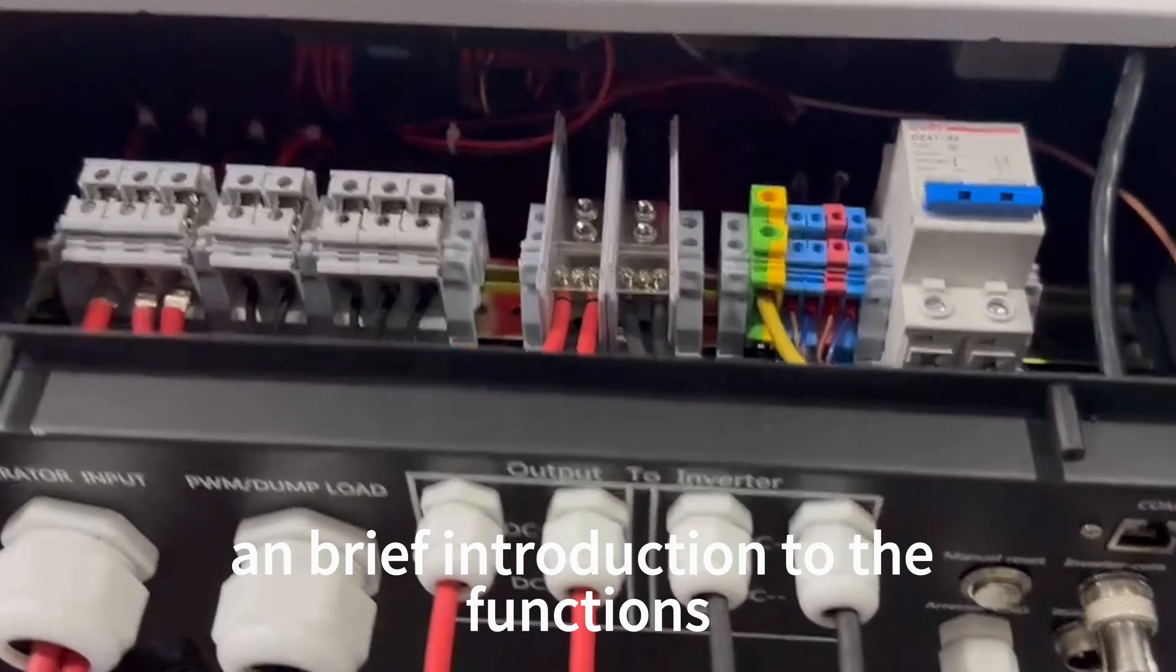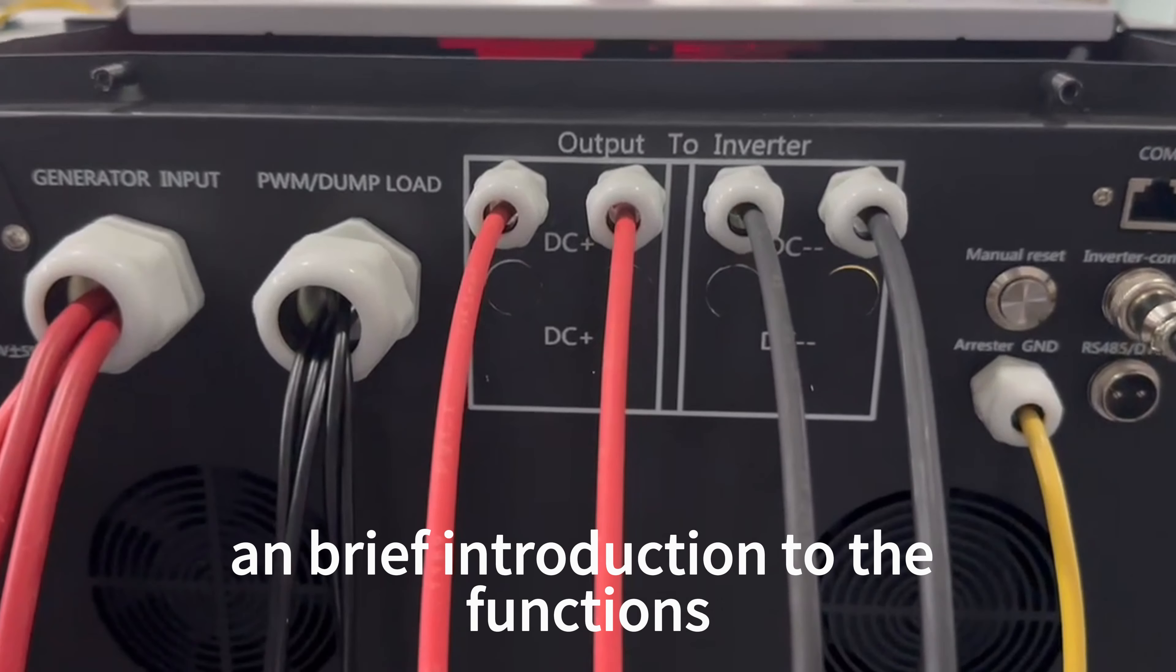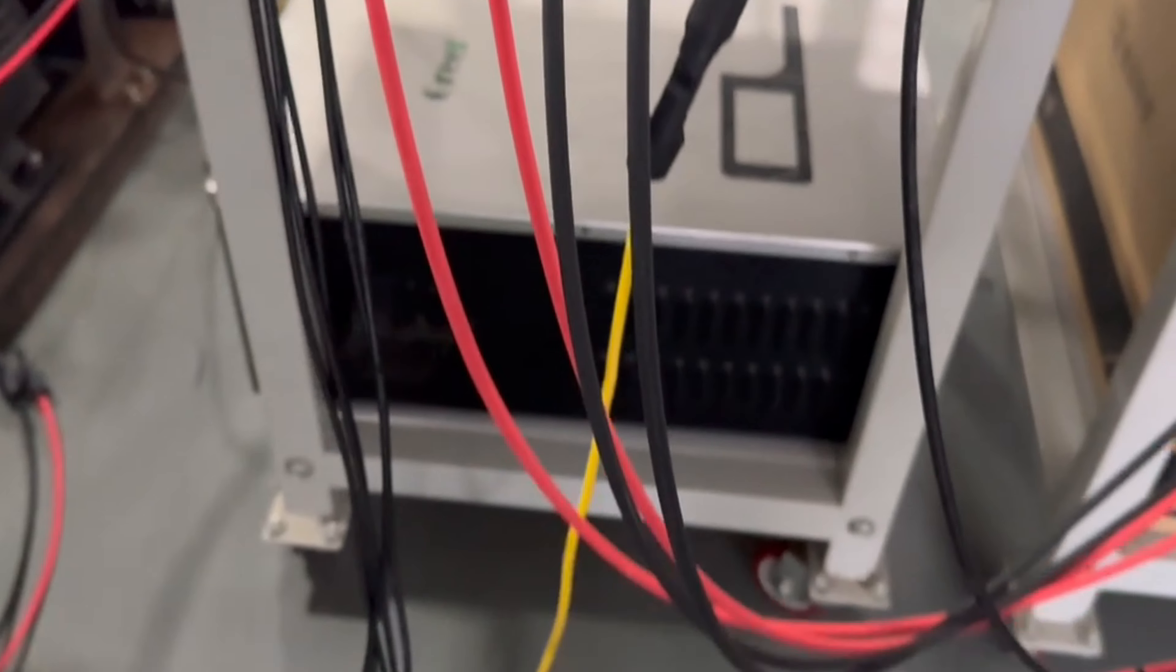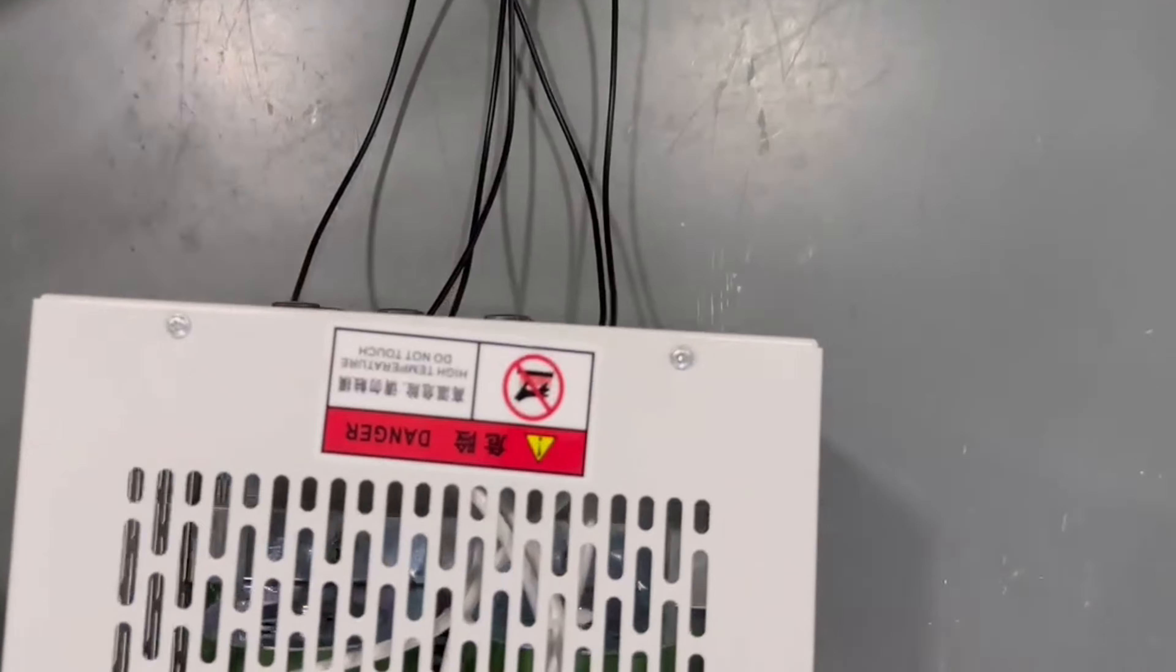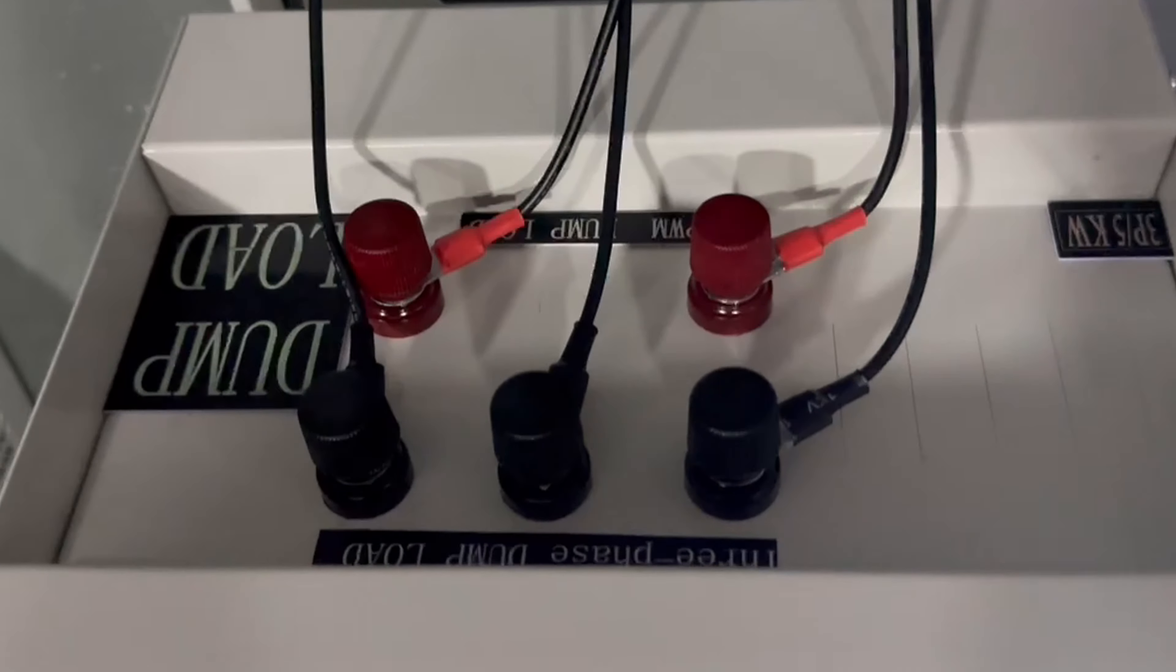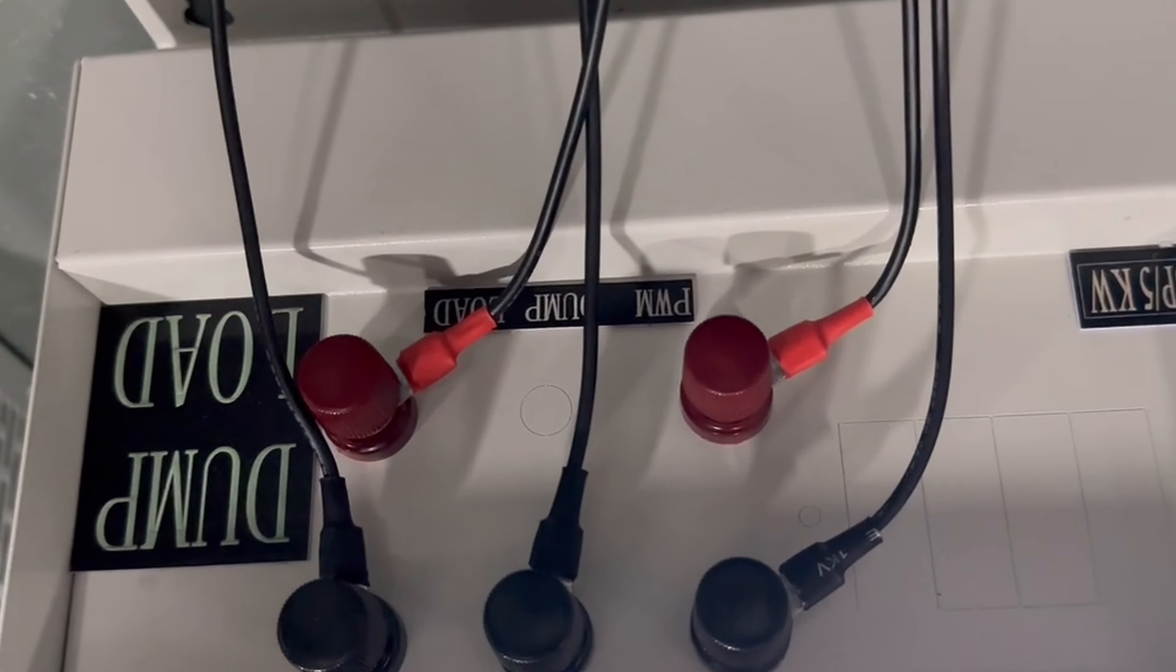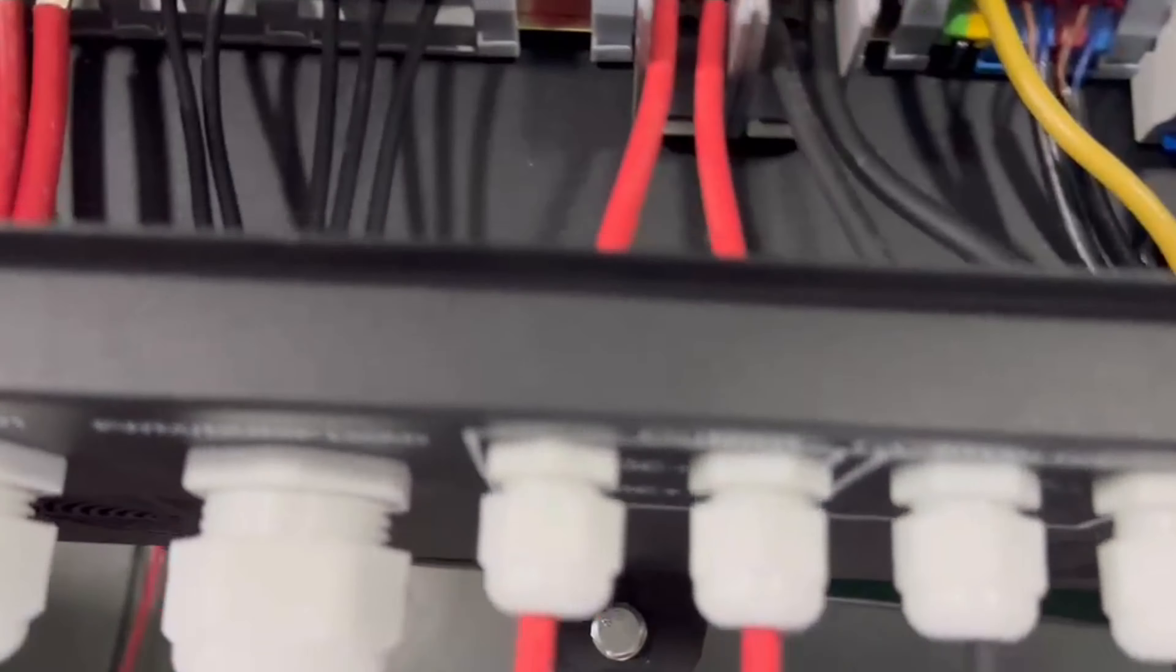Let's take a look at how to connect and a brief introduction to the functions. The black terminal is connected to the three wires of the three-phase load unloading, and the red terminal is connected to the two wires of the PWM.